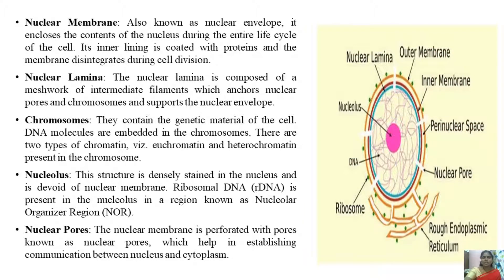The structure of the nucleus: the outermost layer is the nuclear membrane, also known as the nuclear envelope. It encloses the contents of the nucleus during the entire life cycle of the cell. Its inner lining is coated with proteins, and the membrane disintegrates during cell division. The nuclear lamina is composed of a meshwork of intermediate filaments which anchors nuclear pores and chromosomes, and supports the nuclear envelope.